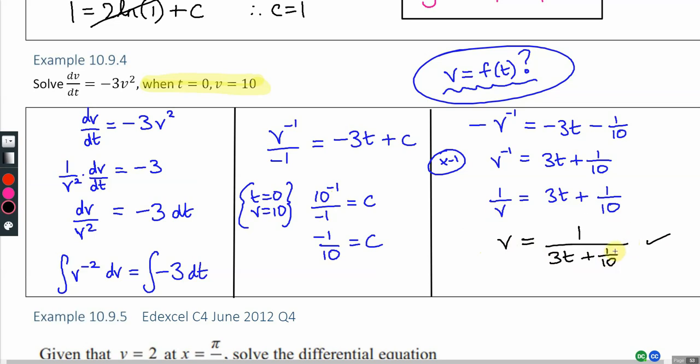I'm going to do one more step because I don't like this mini fraction that I've got in the denominator. So I've got a fraction within a fraction, and I'm simply going to deal with that by multiplying the top of that fraction by 10 and also the bottom of the fraction by 10 as well. There we go. So 10 over 30t plus 1.